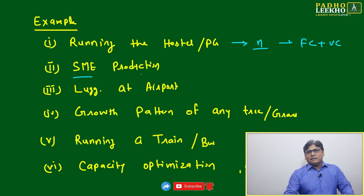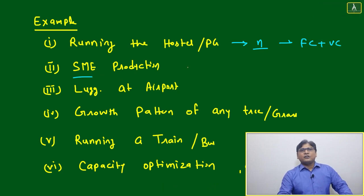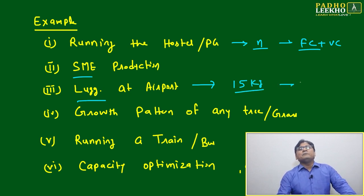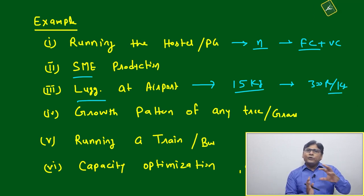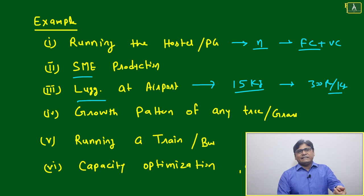SME production - small medium scale enterprises, whatever they are producing will depend on fixed cost and variable cost. Luggage at the airport - certain kgs will be free for every person, like most of the time 15 kg. If you are taking more than 15 kg then it will be chargeable, suppose 300 rupees per kg. The fixed cost is whatever is included in your ticket, that is your 15 kg. If you are taking more than that it will vary depending on airlines.